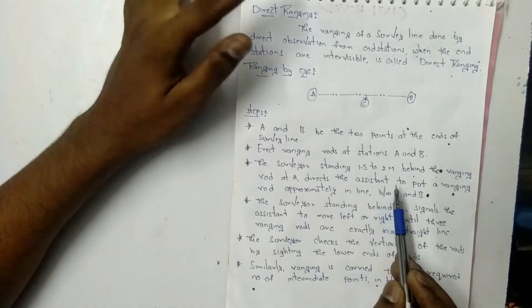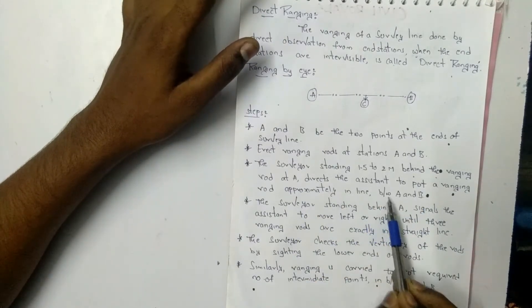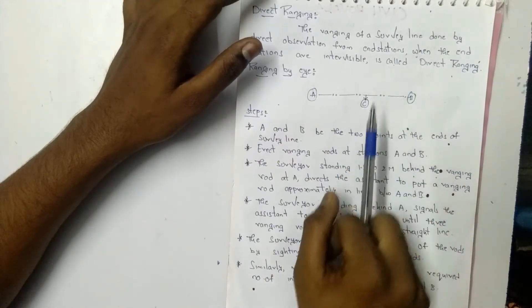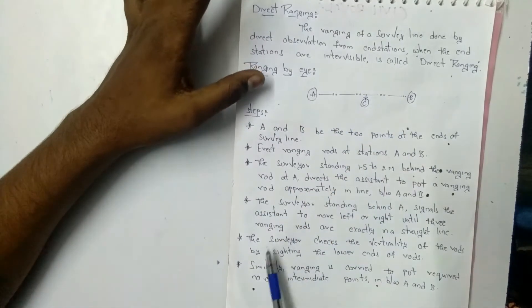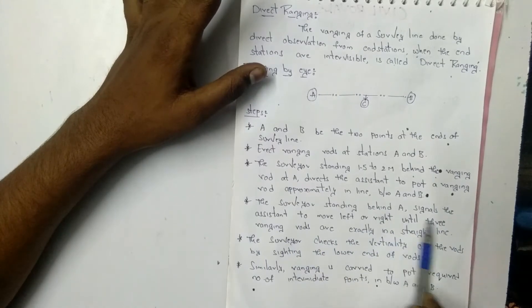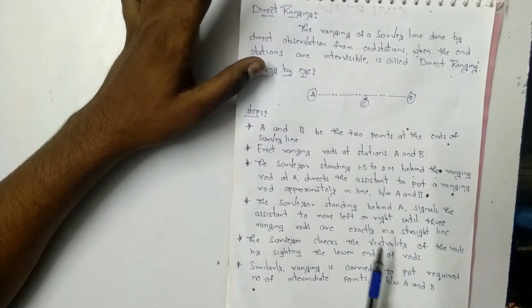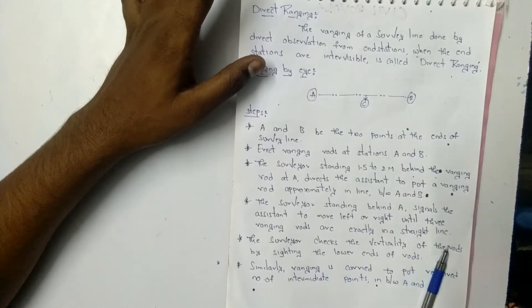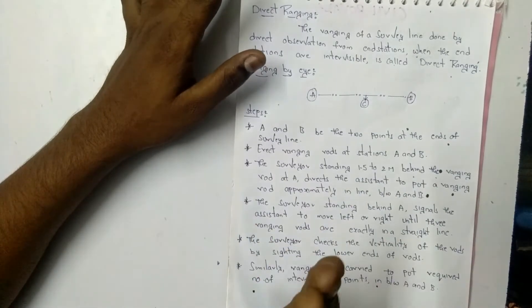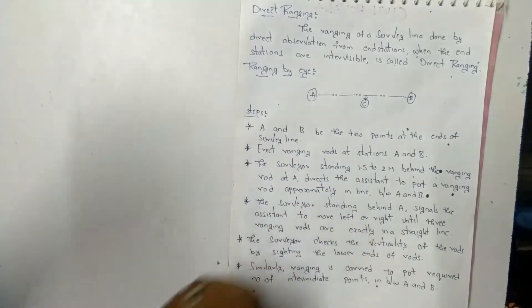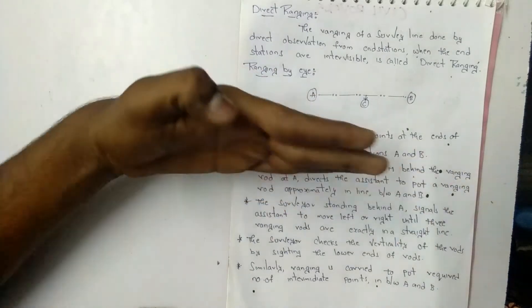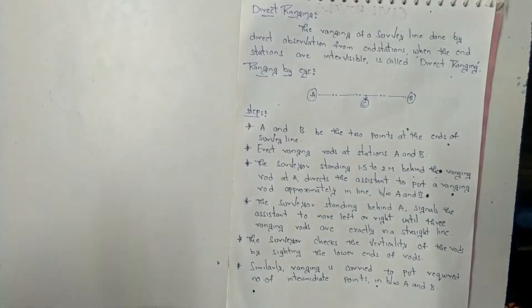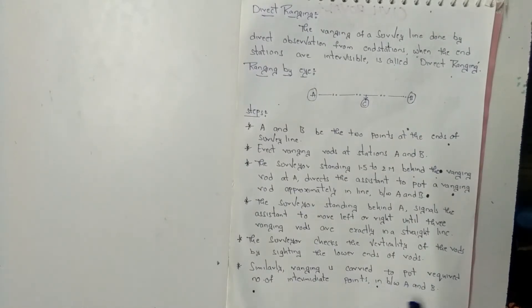The surveyor directs the assistant to put a ranging rod approximately in the line between A and B. The surveyor, standing 1.5 to 2 metres behind station A, signals the assistant to move left or right until the three ranging rods A, C, B are exactly in a straight line. The surveyor checks the verticality of the rod by sighting the lower ends. When A, C, B are in a perfect straight line, the ranging is complete.